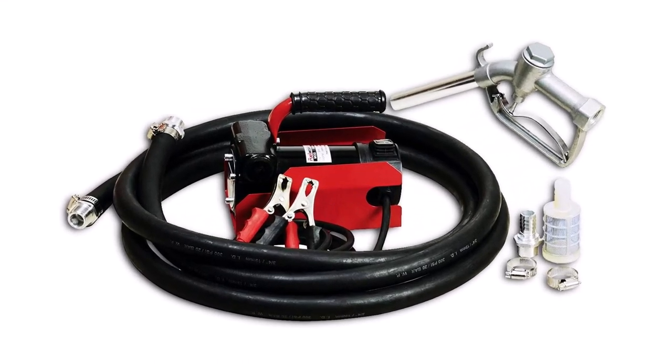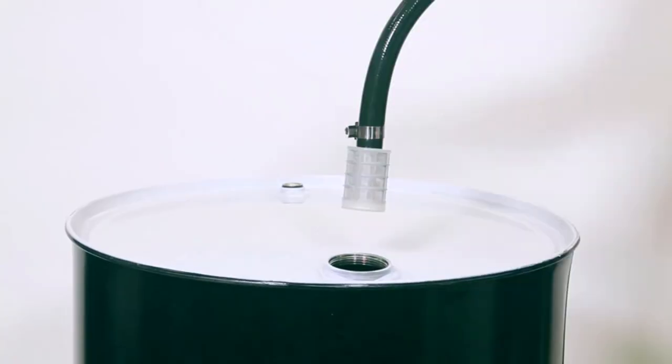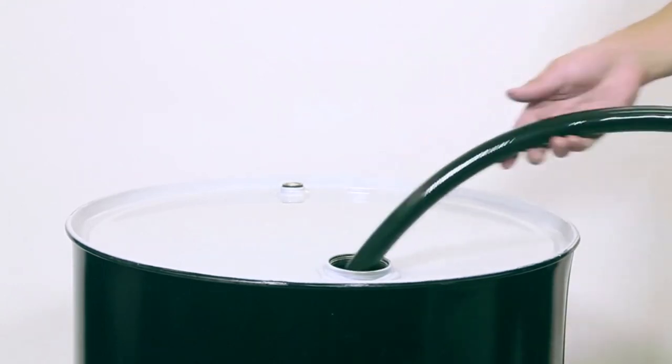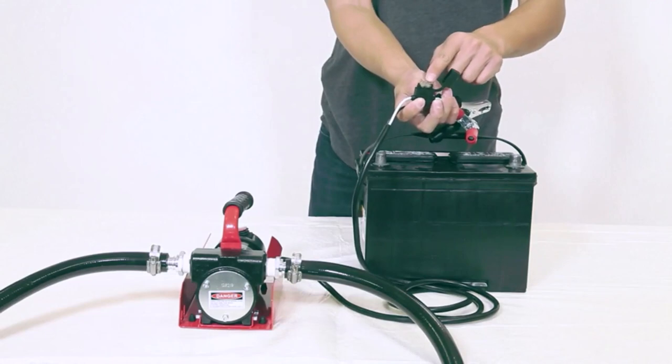It comes with a 13-foot fuel hose and a 12-volt motor. It's capable of pumping up to 10 gallons of fuel per minute. As an extra benefit and great feature, the hose can be cut and adjusted to your desired length. The pump is also quite simple to set up.